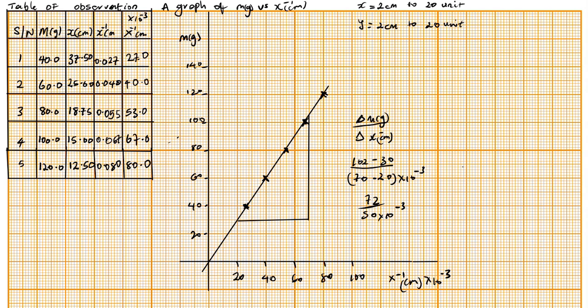So now we divide: 72 divided by 50 times 10 to the minus 3, and that gives us 1440. This becomes our slope. Thank you very much.